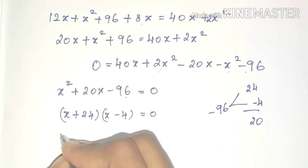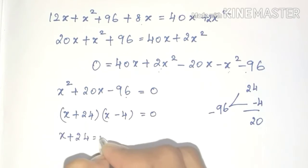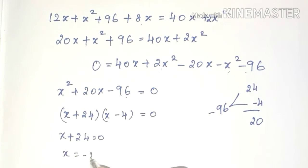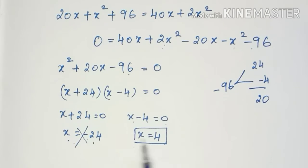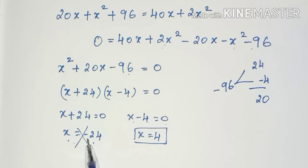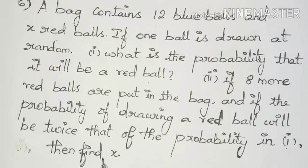Setting each factor to zero: x + 24 = 0 gives x = −24, and x − 4 = 0 gives x = 4. Since x must be positive, x = 4.